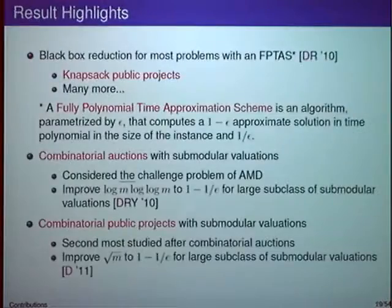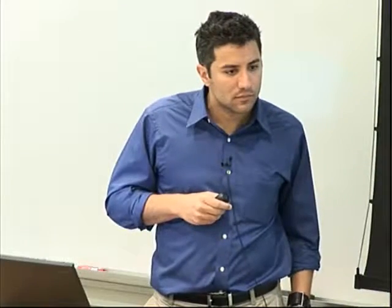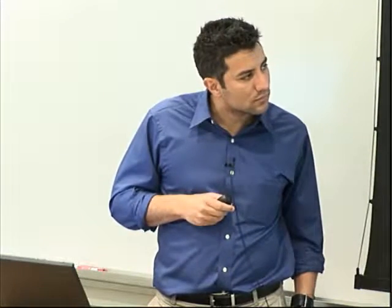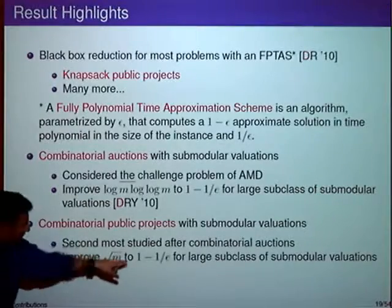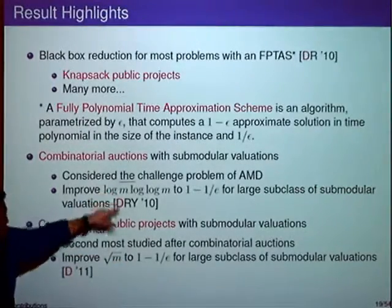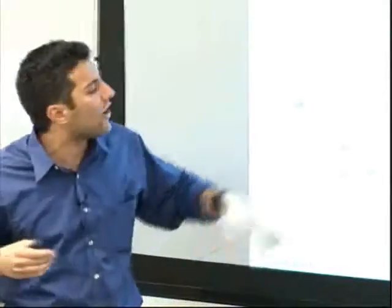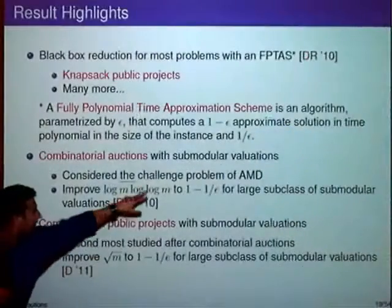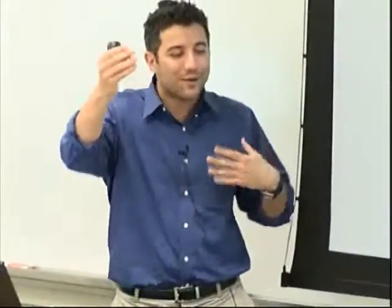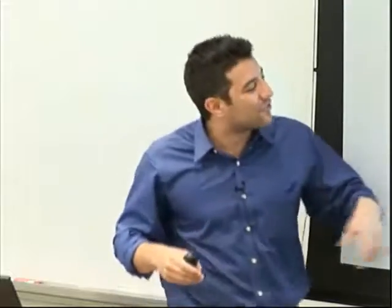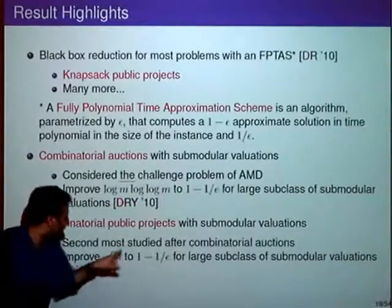One clarification about notation: I'm using the common approximation algorithm convention where approximation ratios are expressed as either greater than or less than one depending on context. The numbers I cited should be interpreted consistently — I apologize for any ambiguity in the notation.